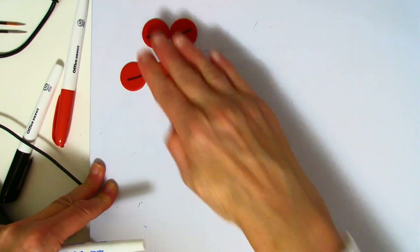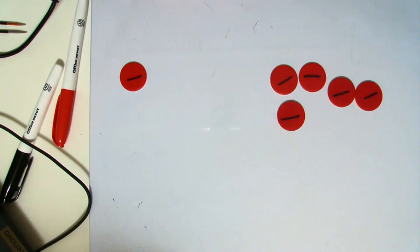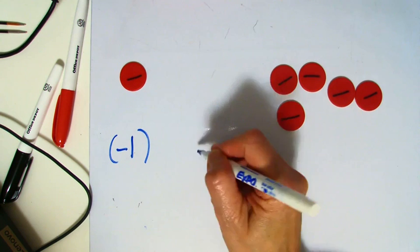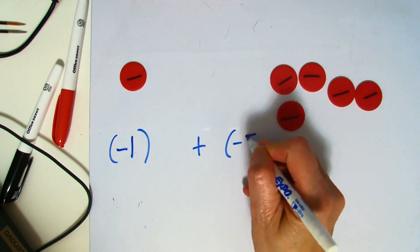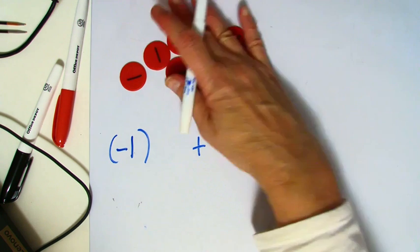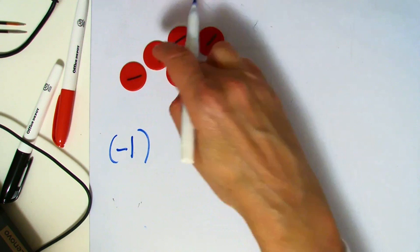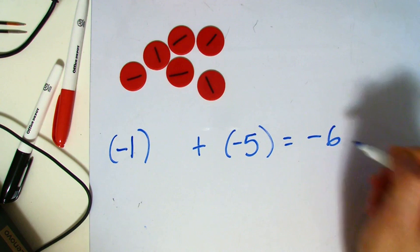Let's do one more with negatives. Let's say I have negative one. And I'm going to add to that negative five. I'm going to combine these together, and I get a total of one, two, three, four, five, six. Negative six.